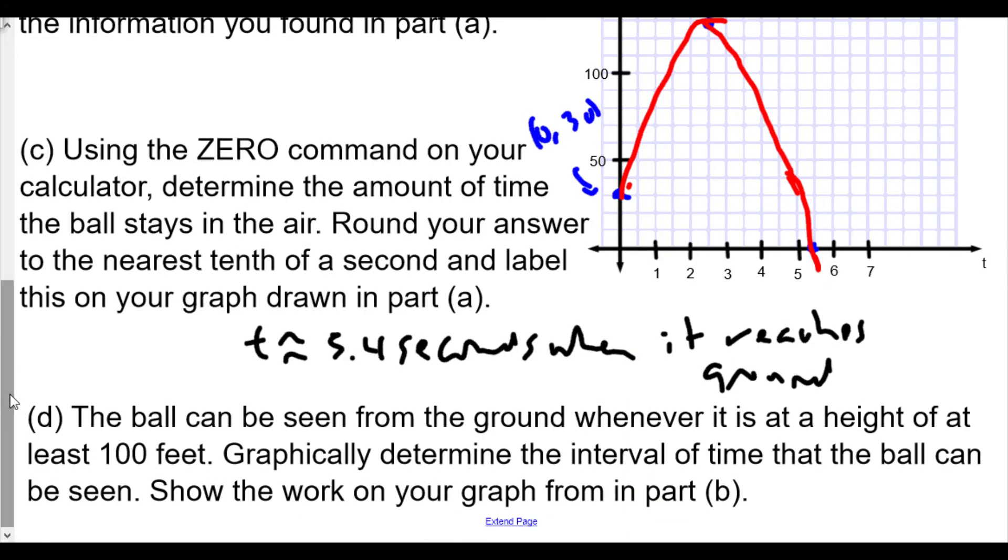The ball can be seen from the ground whenever it is at a height of at least 100 feet. Graphically determine the interval of time that the ball can be seen, show the work. If I was to draw a horizontal line at 100 feet, it looks like based upon my sketch here that it would be somewhere here and here.